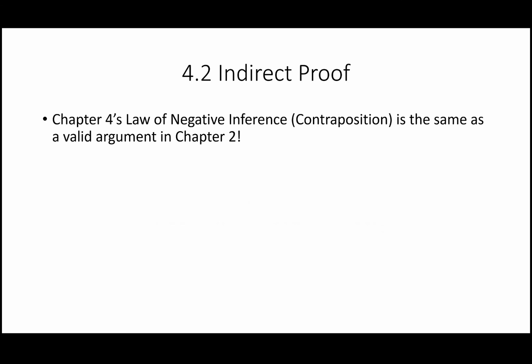Here's an old friend from Chapter 2: the law of negative inference, also called contraposition. This is the same as the valid argument modus tollens. The structure: first premise is if P then Q; second premise is the negation of Q; conclusion is the negation of P. Modus tollens illustrates the logical equivalence of a conditional statement and its contrapositive — the flip and reverse.